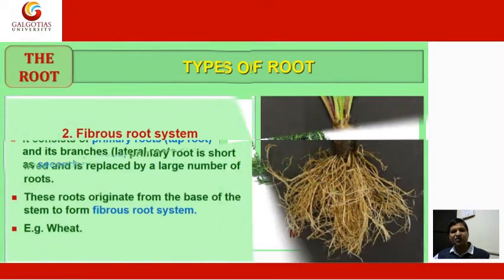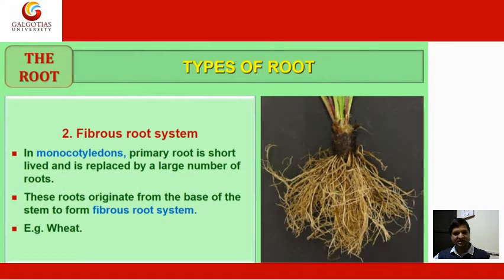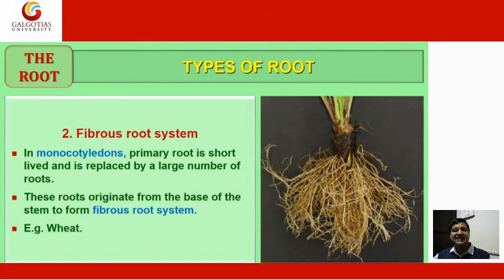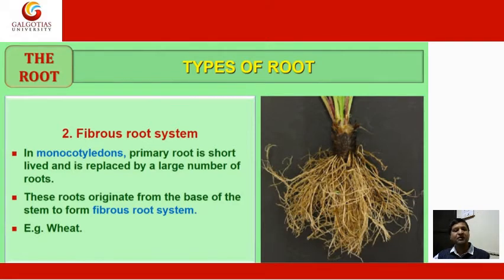In the fibrous root system, found in monocotyledons, the primary root is short-lived and is replaced by a large number of roots. These roots originate from the base of the stem to form the fibrous root system. A good example of the fibrous root system is wheat.